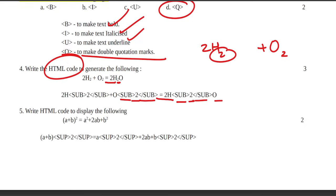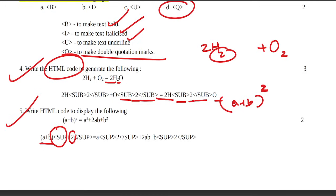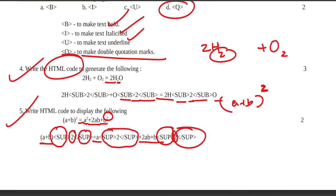Then A plus B all square equals A squared plus 2AB plus B squared. A plus B is normal text, but A plus B all square — the exponent 2 is superscript. Use sup open and sup close to mark the superscript 2.